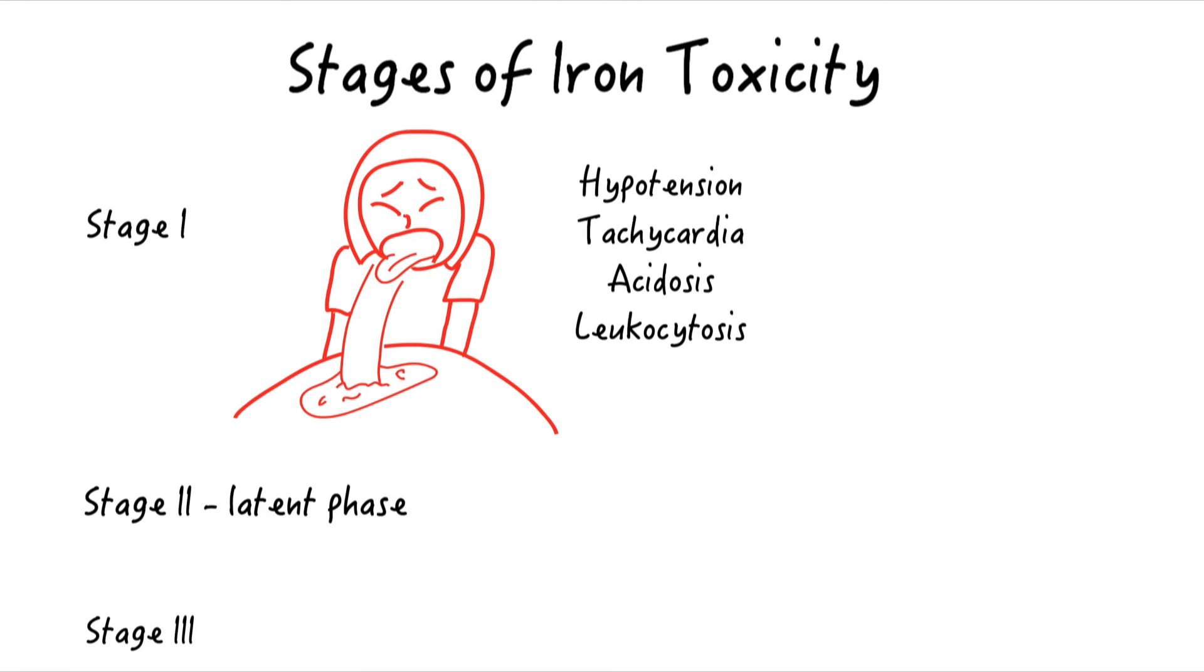In the third stage, profound toxicity develops from hypovolemia, vasodilation, poor cardiac output with decreased tissue perfusion, resulting in worsening metabolic acidosis. Patients can develop lethargy and coma, worsening GI bleed, acute kidney injury, and pulmonary edema.